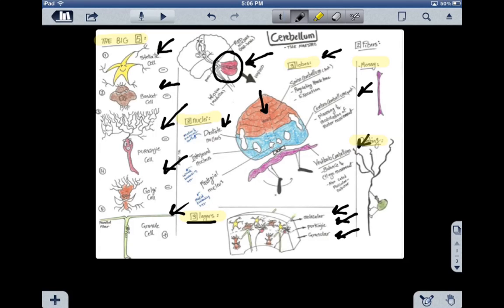It's important to remark that the first four cells are all inhibitory, except for the last one, which is number five, granule cell, which is the only excitatory cell in the cerebellum.